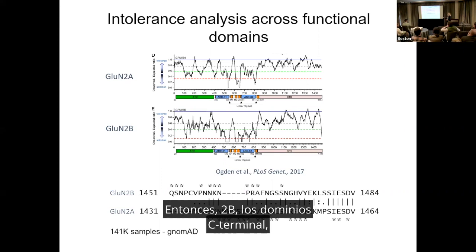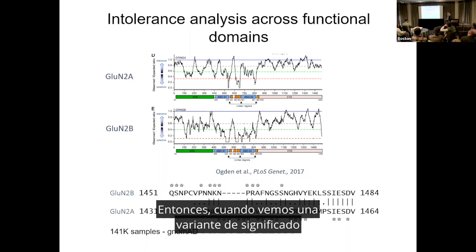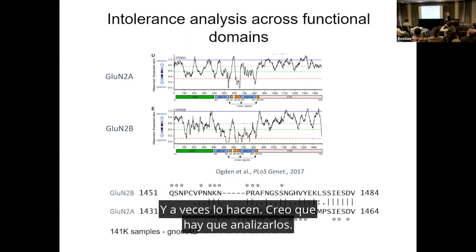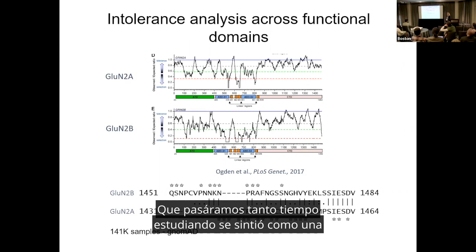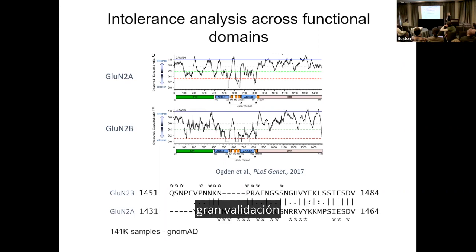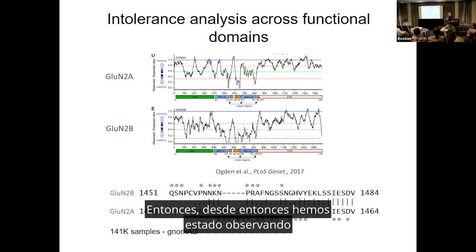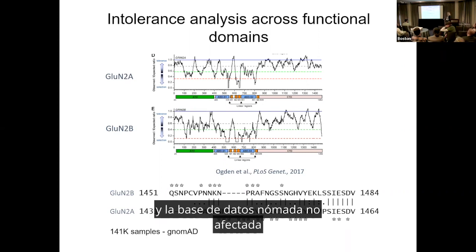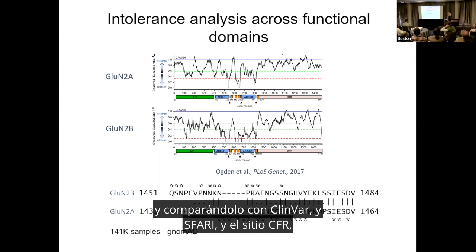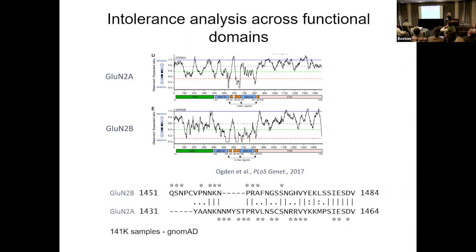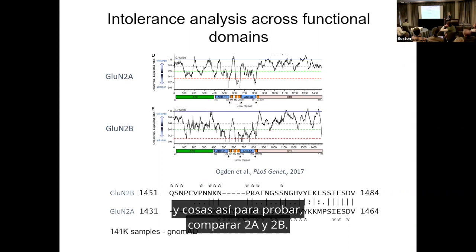What caught my eye was 2B: the C-terminal domains are much more tolerant to variation in general. When we see a variant of unknown significance, sometimes they don't have an effect on our assays, and sometimes they do. But the fact that tolerance crashes to zero in 2B in that specific region we've spent so long studying felt like a lot of validation that that region is incredibly sensitive to any sort of changes. Since then, we've been carefully watching databases, comparing the unaffected gnomAD database to ClinVar, SFARI, and the CFGRI site, to compare 2A and 2B.